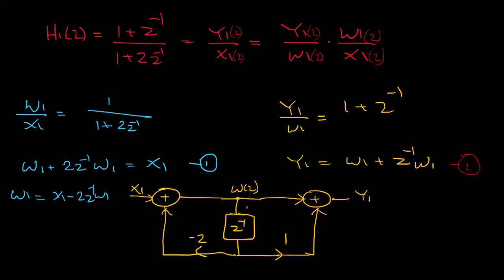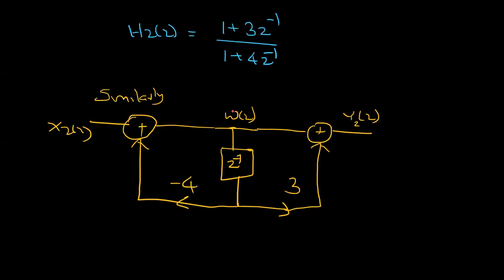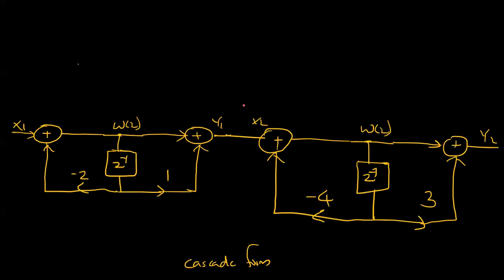Using Direct Form 2 realization for each section, we write equation two. Then you apply the Direct Form 2 model to get w1 in terms of x and previous states, and solve for y1. This completes the cascade form realization for the given example.